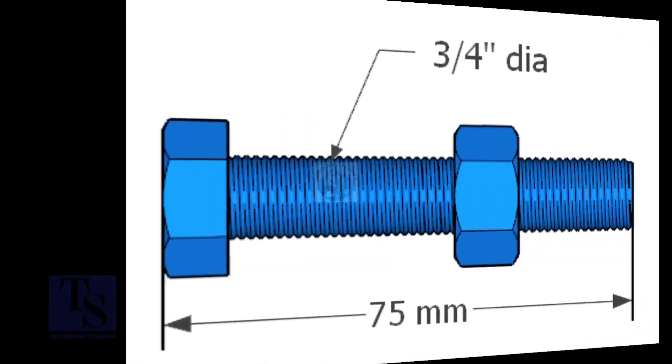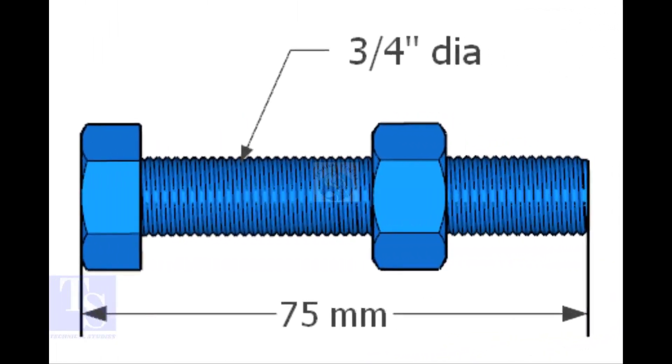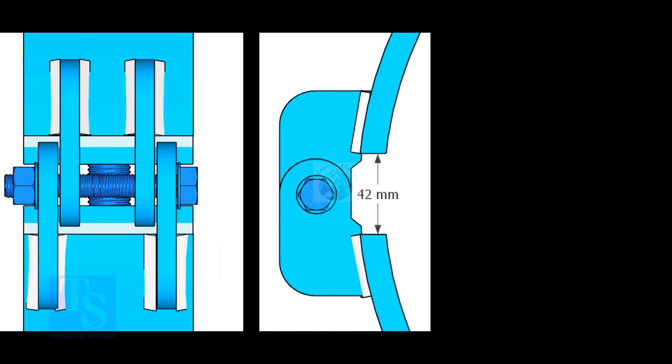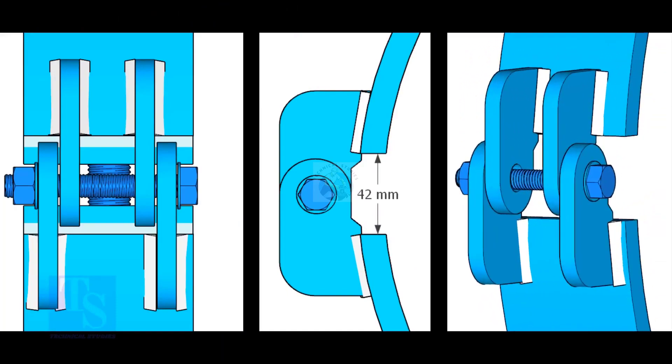The quantity is seven number. Weld the hinges as shown. Five millimeters fillet weld is enough. The gap shown is not very important; it depends on the thickness of the clamp.